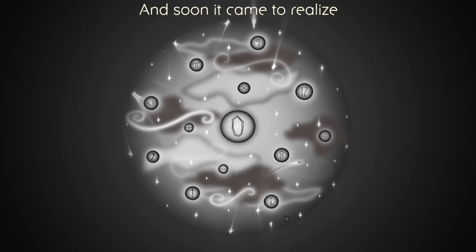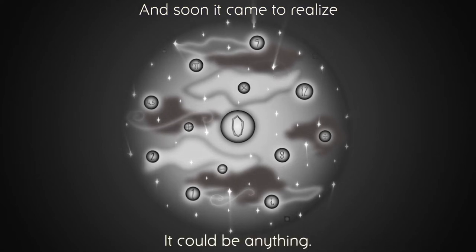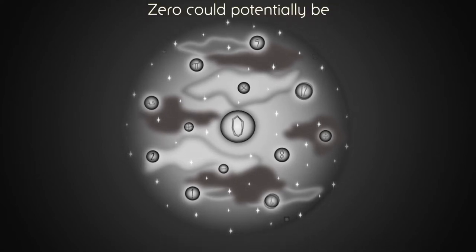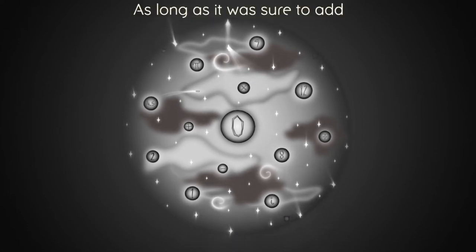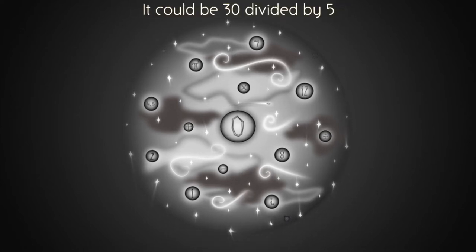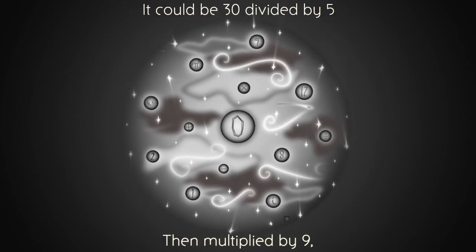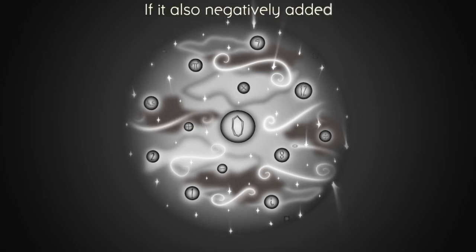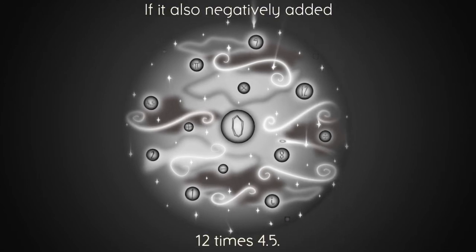And soon it came to realize it could be anything. Zero could potentially be 2 plus 8 plus 3, as long as it was sure to add negative 13. It could be 30 divided by 5, then multiplied by 9, if it also negatively added 12 times 4.5.